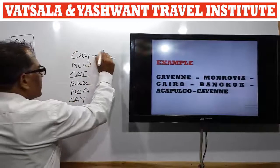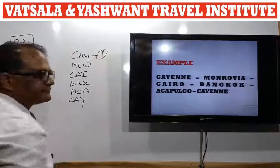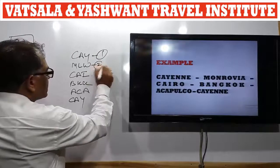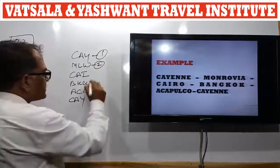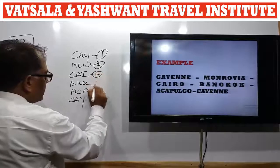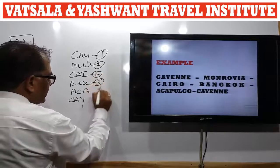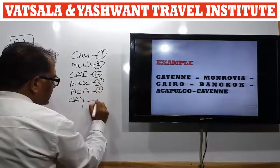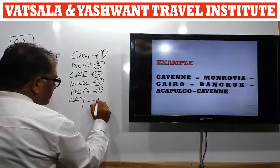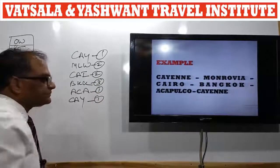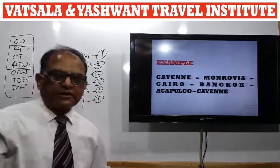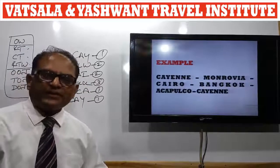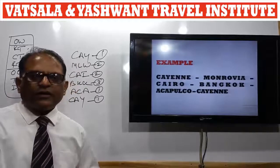Kane is in French Guiana, Area 1. Monrovia is in Liberia, Area 2. Cairo is in Egypt, Area 2. Bangkok is in Thailand, Area 3. Acapulco is in Mexico, Area 1. Kane is in French Guiana, Area 1. In this itinerary, all three areas are involved.